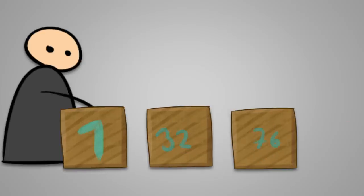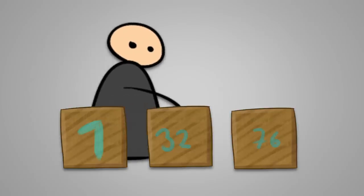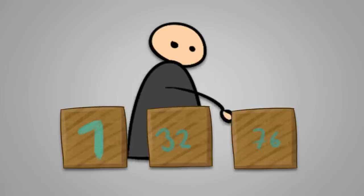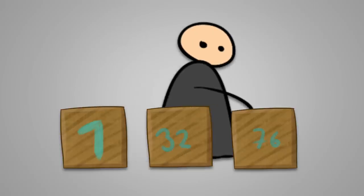For example, if the first box contains the name of prisoner 32, then prisoner 1 will check box 32. If that box contains the name of prisoner 76, he will then open box 76, and so on and so forth.